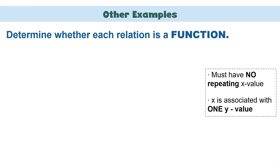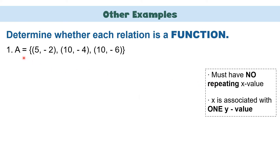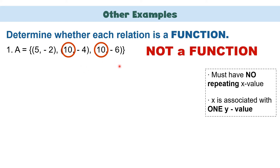Let us have more examples. Remember that to identify a relation as a function, it must not have repeating x-values, and x must be associated with only one y-value. Example number 1: set A equals (5, −2), (10, −4), and (10, −6). Looking at the x-values, we have 5, 10, and another 10. We have two 10s, so therefore this will not be considered as a function — not a function because we have repeating x-values.